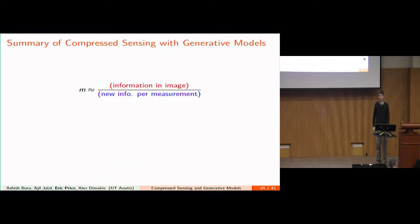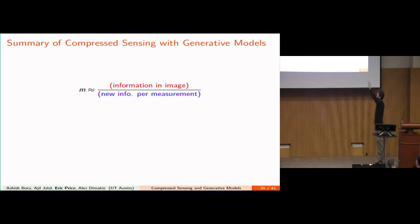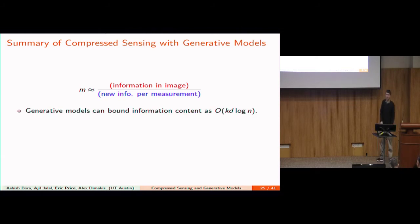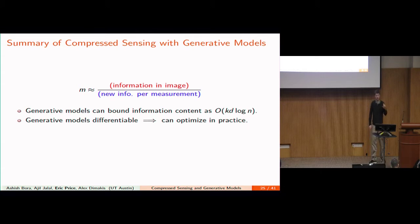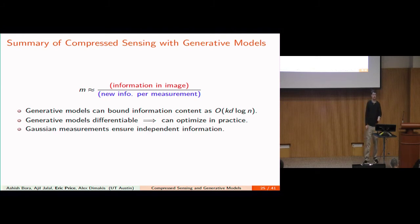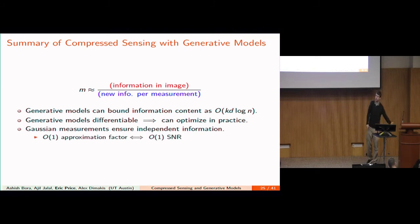In summary: generative models let you describe the information content of images as about k·D·log(N), where D is the number of layers, k is the input dimension, and N is the output dimension. If the generative model is differentiable, you can optimize this in practice. Gaussian measurements ensure independent information, and for a constant-factor approximation there's a constant number of bits per measurement — giving k·D·log(N) required measurements.